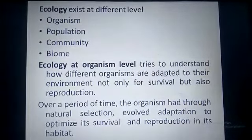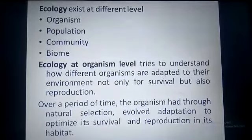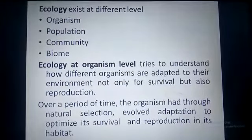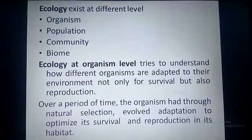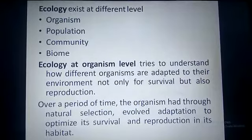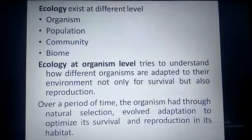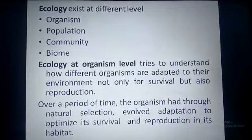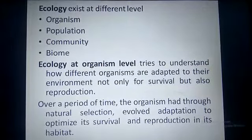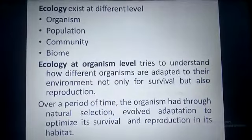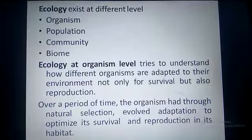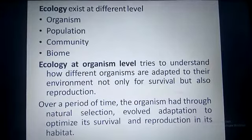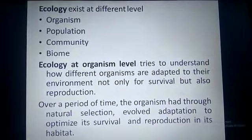Biome refers to a large area on Earth with similar climate, plants, and animals. Examples of biomes include desert, grassland, and tropical forest. In this chapter we are going to discuss ecology at the organism and population level, which tries to understand how different organisms are adapted to the environment for their survival and reproduction. Over time, organisms have undergone natural selection and evolved adaptations to optimize their survival in the habitat.